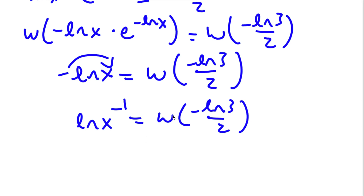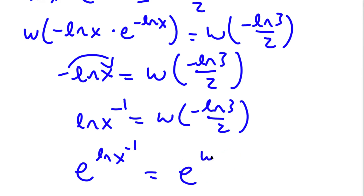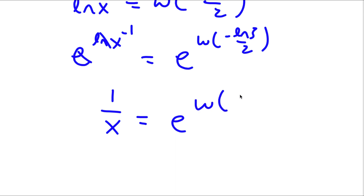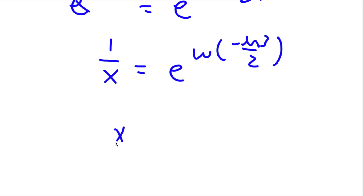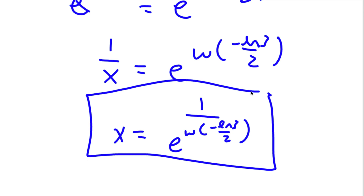Now if I take e on both sides, I get e to the power of ln x to the power of negative 1 is equal to e to the power of W of negative ln 3 over 2. These two cancel out, so I'm left with 1 over x is equal to e to the power of W of negative ln 3 over 2. And this means x is equal to 1 over e to the power of W of negative ln 3 over 2. So that is my answer.